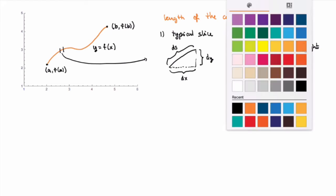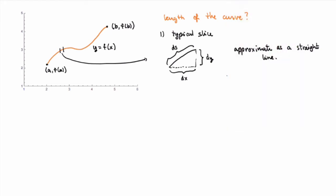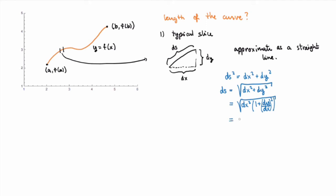If I assume the segment is well approximated by a straight line — valid when dx and dy are very small — then I can calculate its length using the Pythagorean theorem: ds² = dx² + dy². Taking the square root, ds = √(dx² + dy²). Now I'll do a little trick: dividing inside by dx², I get √(1 + (dy/dx)²) · dx. Taking the limit as dx goes to zero makes this precise.